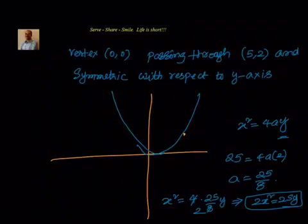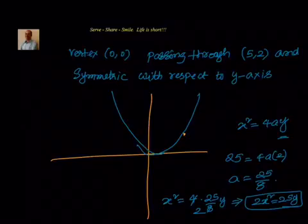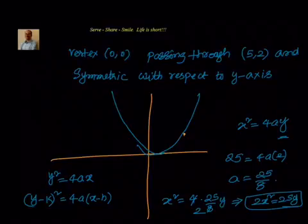These were some problems where we were given different input parameters like focus, vertex, directrix, or a point the parabola passes through, along with the axis of the parabola, to find its equation. In the next session we will look at the case where the vertex is not at (0, 0) but at some other point (h, k), and the equation becomes (y - k)² = 4a(x - h), because the origin is shifted from (0, 0) to (h, k).